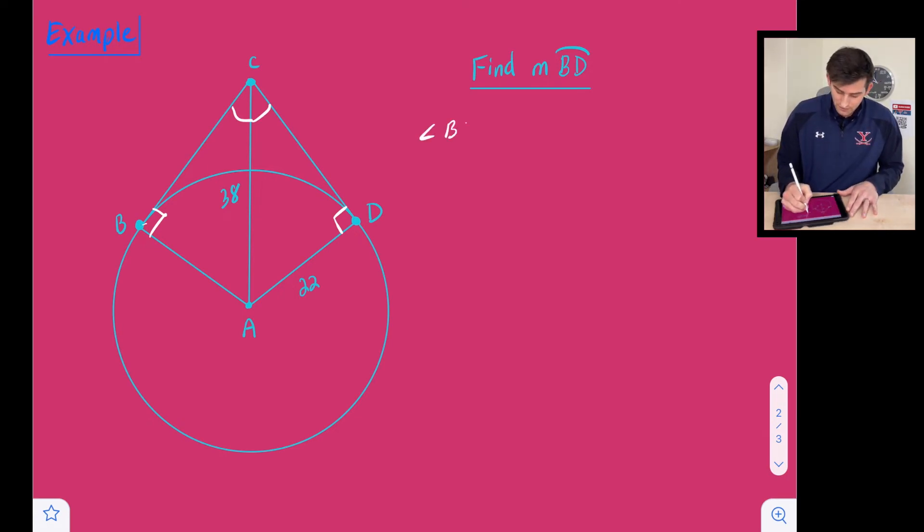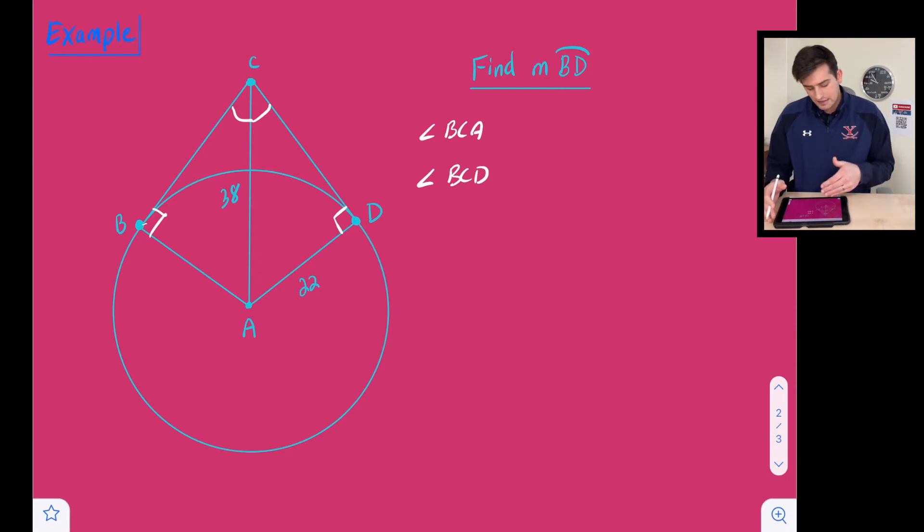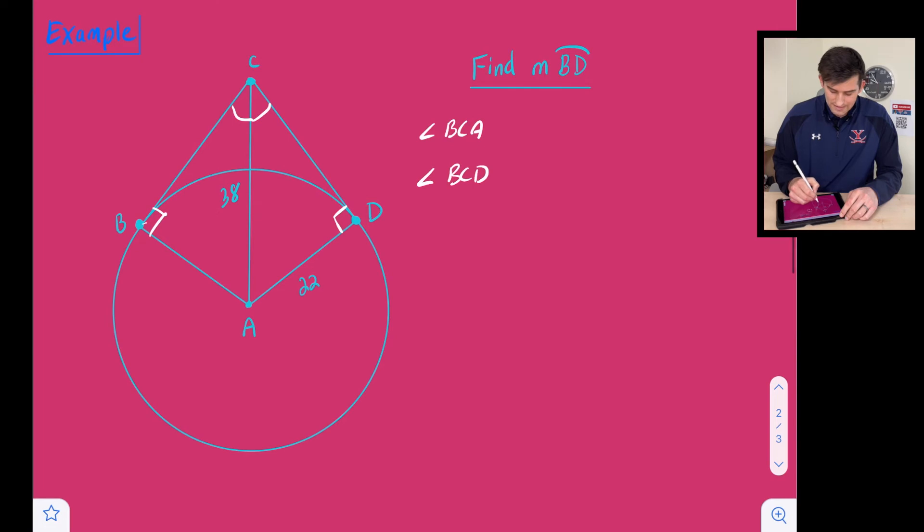So let's solve for angle BCA, and then we'll just multiply that by two to get the measure of angle BCD. So we can use our inverse trig ratios here because we have the hypotenuse, which would be 38, and we have a leg of our triangle, which would be 22. So I know if this side, AD is 22, then AB is also 22. So if I want to find the measure of angle C, I've got opposite and I've got hypotenuse. So that's going to be inverse sine.